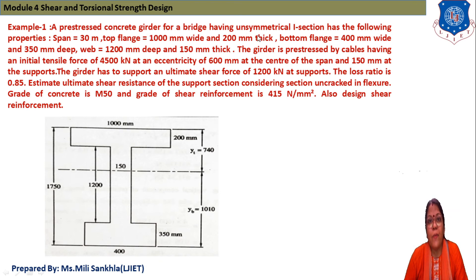Prestressed concrete girder for bridge having unsymmetrical I section has following properties. Span 30 meter. Top flange 1000 mm and thickness is given 200 mm. Bottom flange 400 mm by 350 mm and web 1200 mm deep and 150 mm thick. Girder is prestressed by cable, initial tensile force 4500 kN at eccentricity of 600 mm at center of span, 150 mm at support. Girder has to support ultimate shear force 1200 kN at support and loss ratio is 0.85. Estimate ultimate shear resistance of support section considering section uncracked. And grade of concrete is given F50, M50 and shear reinforcement is given 415. Also design the shear reinforcement.